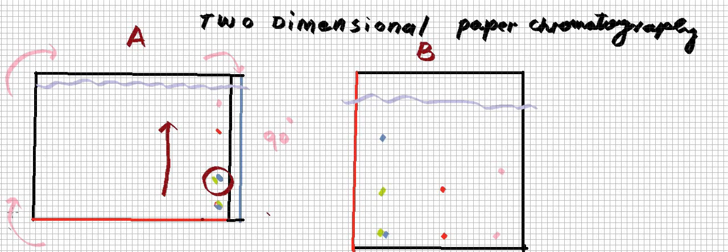What we will do is rotate this sheet of paper at an angle of 90 degrees so that these spots are at the bottom side.